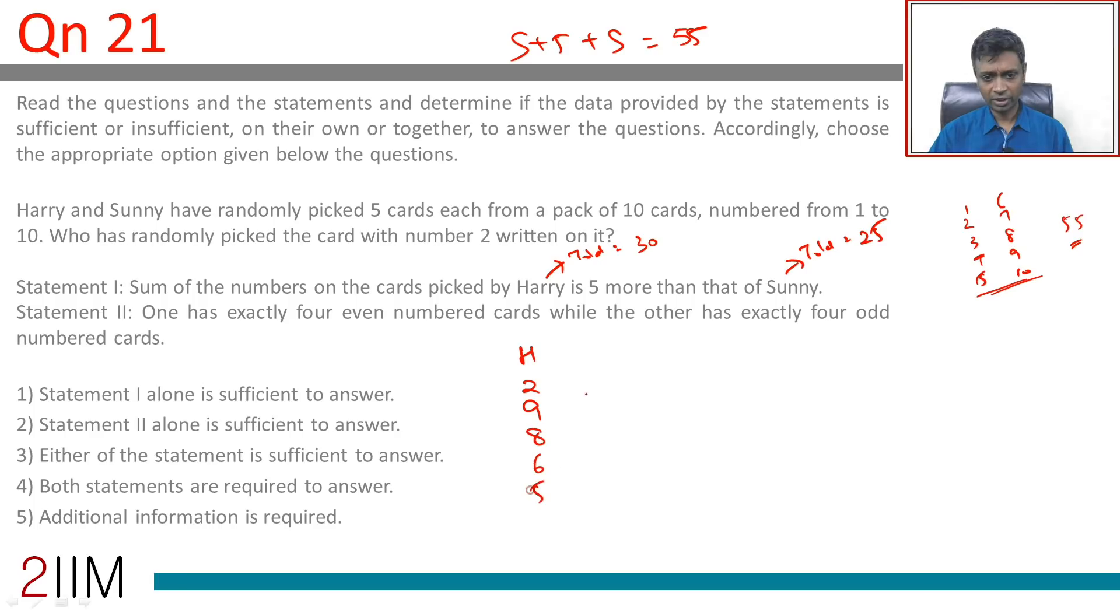2, 9, 8, 6, 5: that's 17, 19, 25, 30. Sonny has the rest, which will be 1, 3, 4, 7, 10: that's 11, 14, 18, 25. This works.